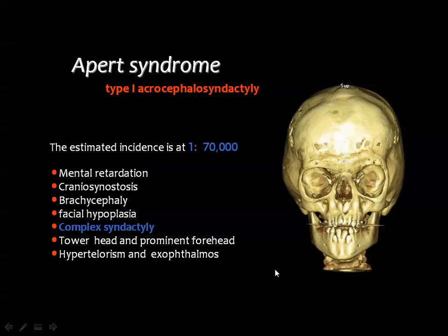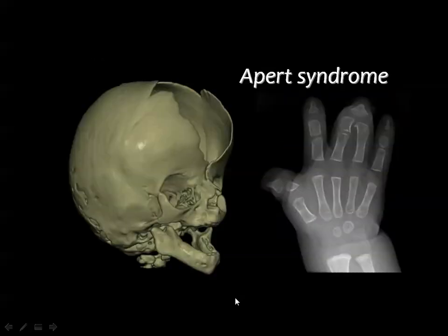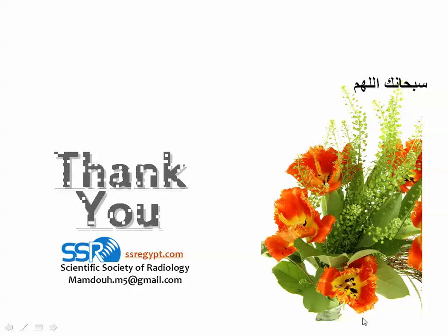Finally, Apert syndrome presents with mental retardation, cranial stenosis, brachycephaly, and digital abnormalities such as syndactyly. Imaging shows fusion and hypoplasia of the phalanges, and hypoplasia of the face and mandible compared to the size of the skull.